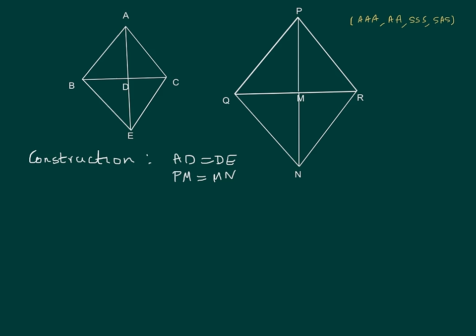Now we can start with the proof. Can we prove ABEC and PQRN as parallelograms? Yes we can. Then the question arises: why do we need that? We want to prove angle A equal to angle P, but there is no other way except proving triangle ABE and triangle PQN similar.